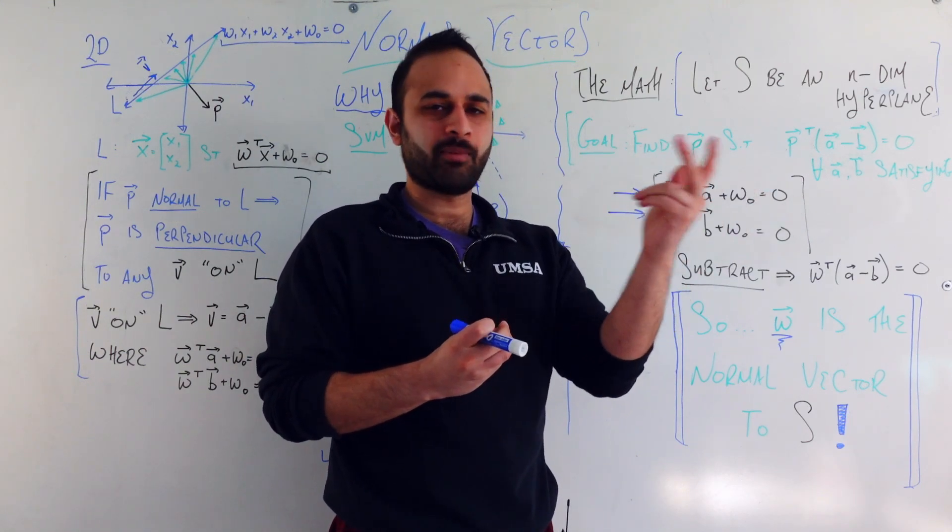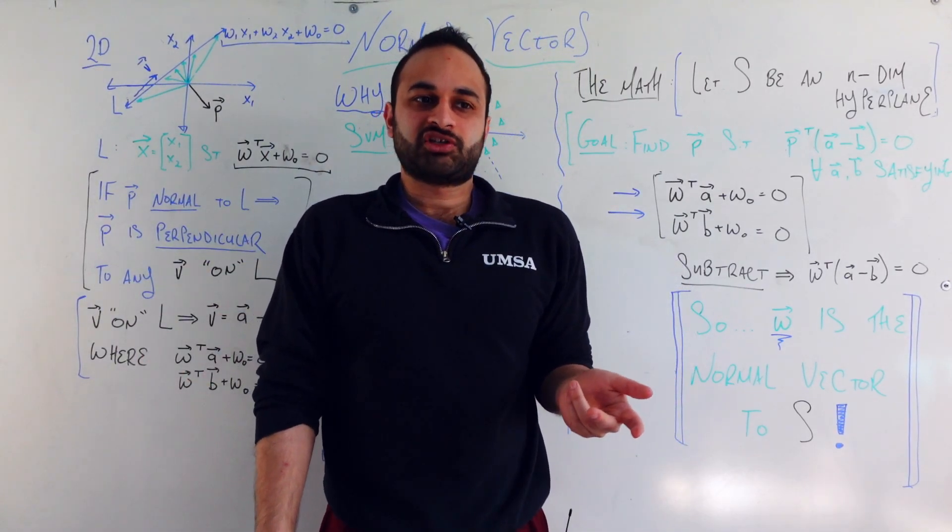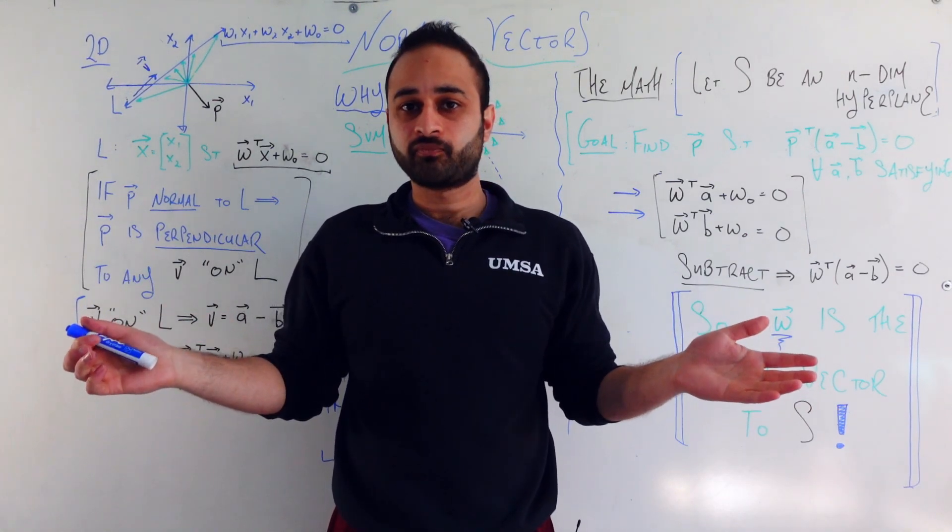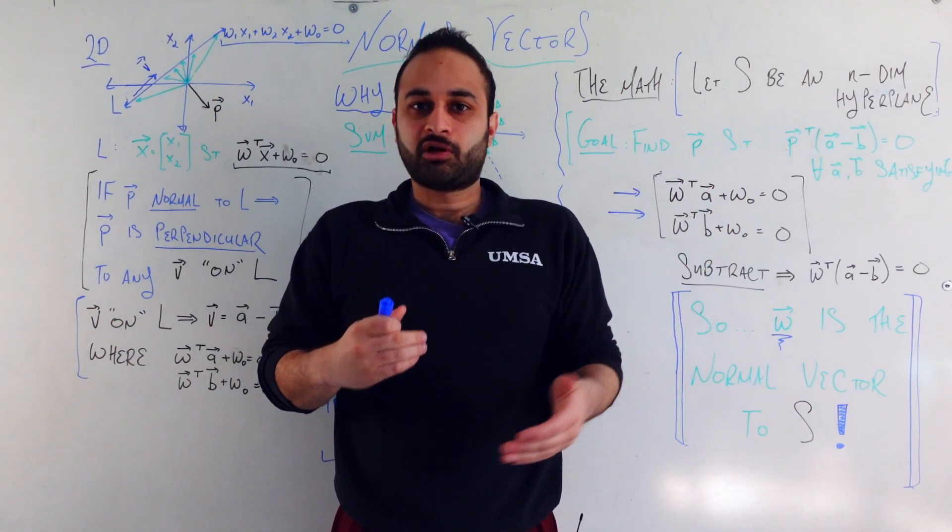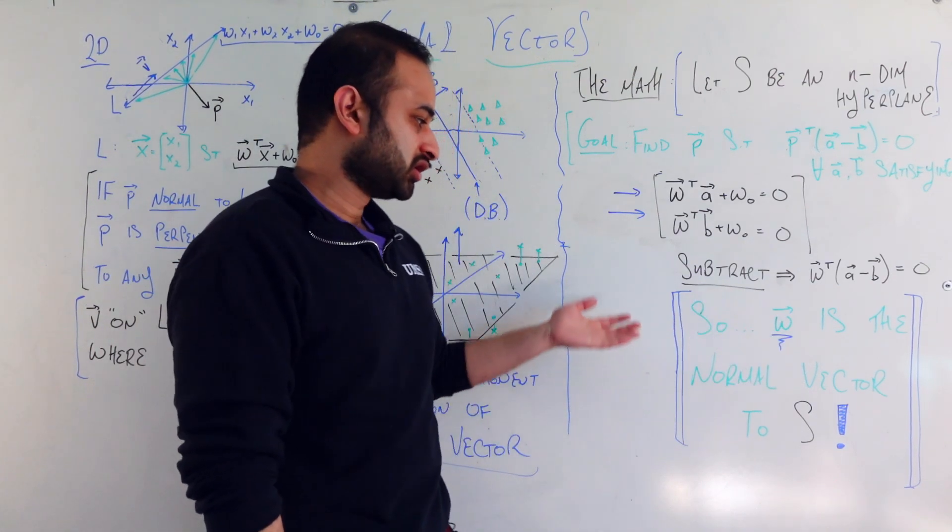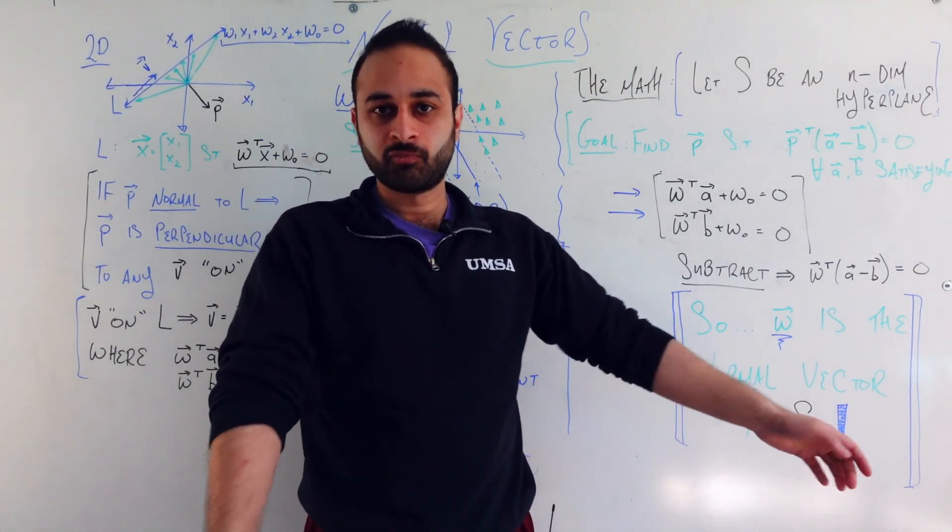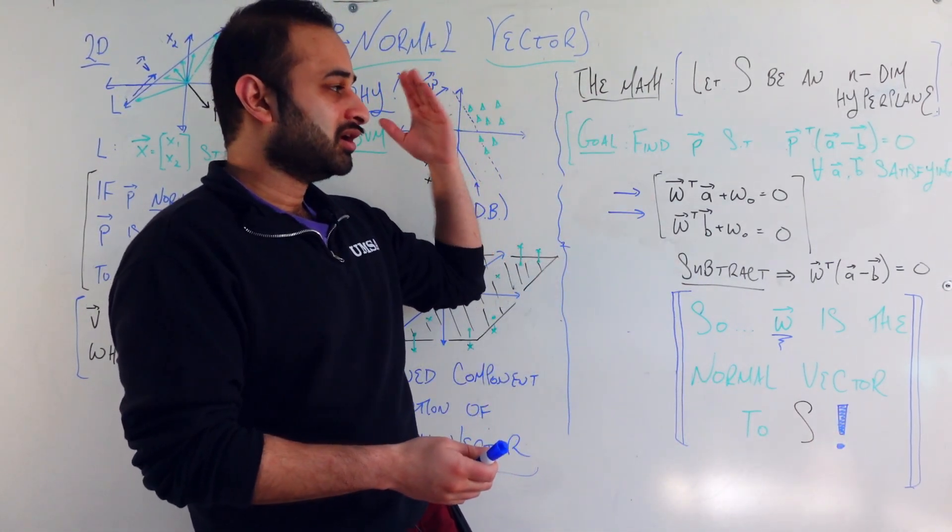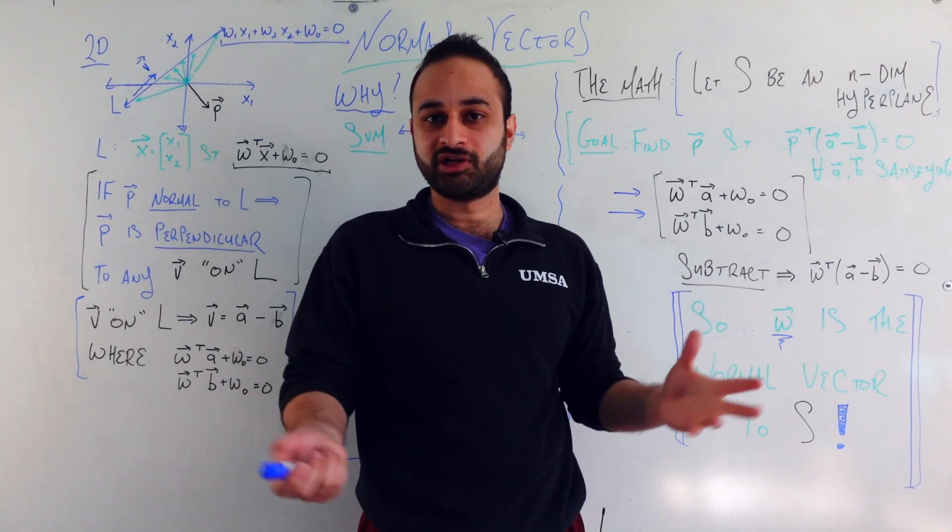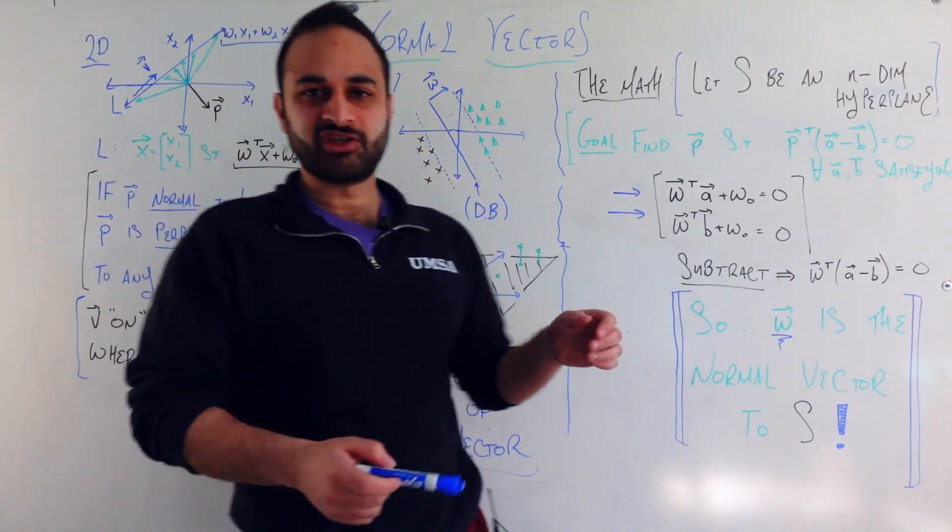Because now we can look at any hyperplane, which is defined by some linear equation, and we can just collect all these Ws, W1, W2, all the way to Wn, and put them in a big vector and we can confidently say that that vector is normal to your hyperplane. And that's kind of crazy. So I've just summarized that here. So W is exactly the normal vector to S. So that's how you'd mathematically get the normal vector to a hyperplane in linear algebra and data science. This ends up being a really nifty thing to have in SVM and all these other applications.